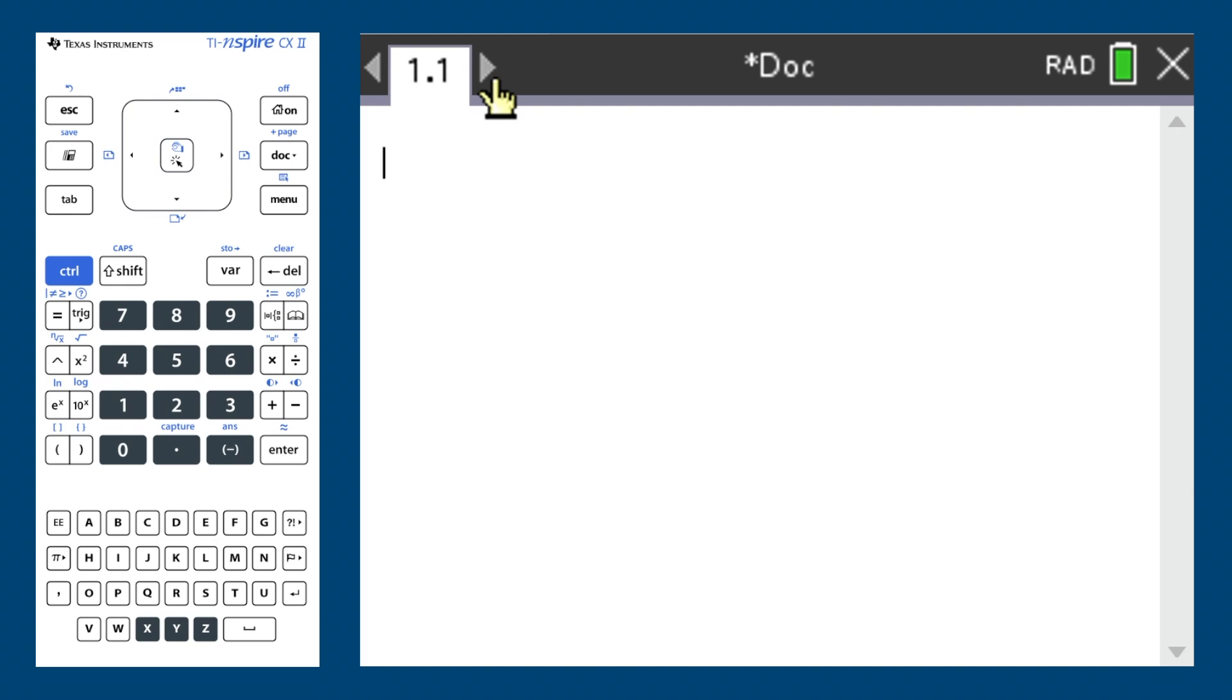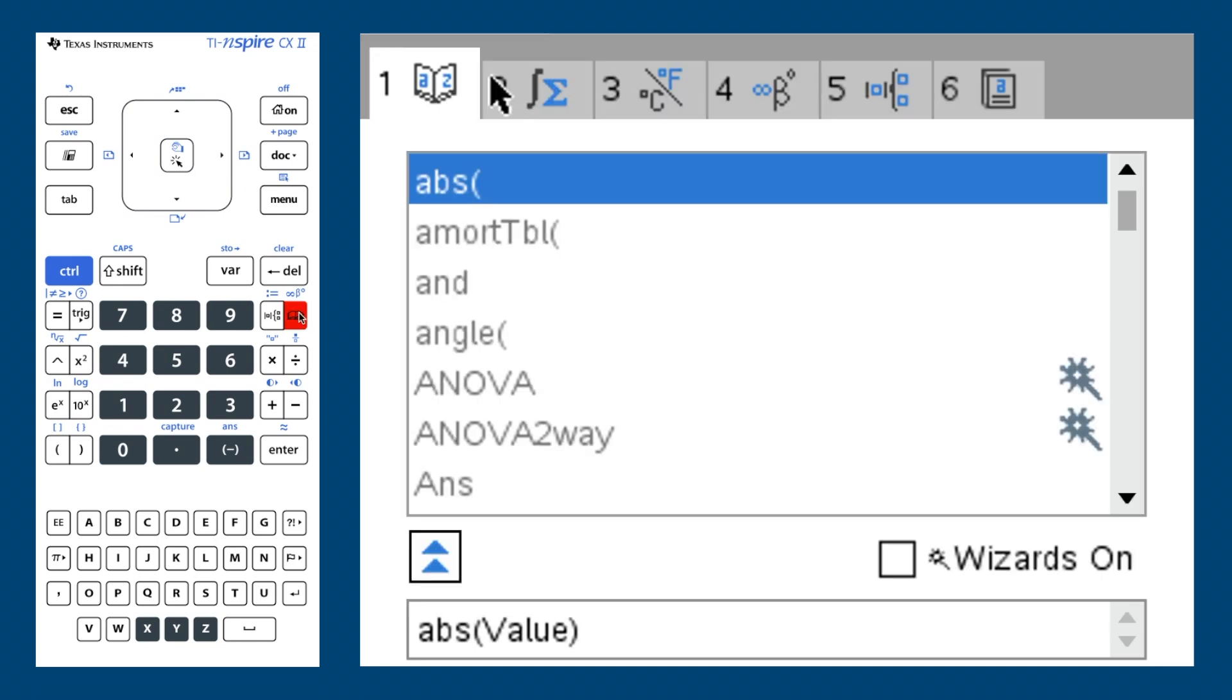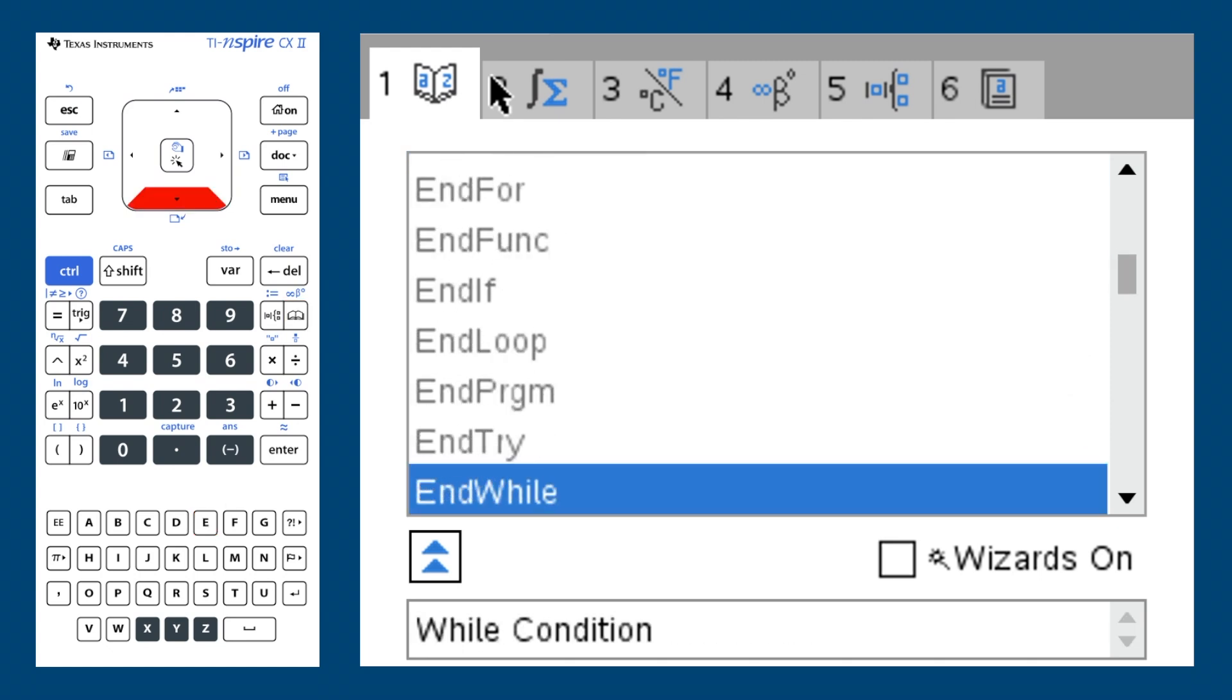To get to the function, press the book icon on the right of the calculator, and then enter E. Scroll down until you find Euler, and press enter.